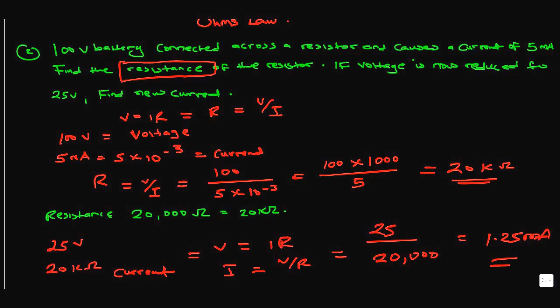On the other hand, an insulator is a material that has very high resistance, which does not allow electrical current to flow. Examples of insulators are plastic, glass, air, and paper.